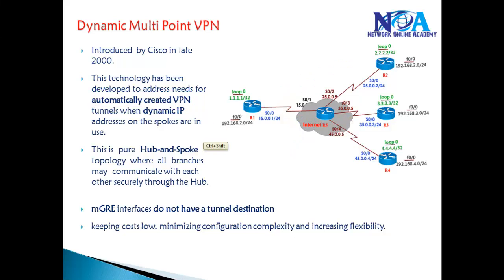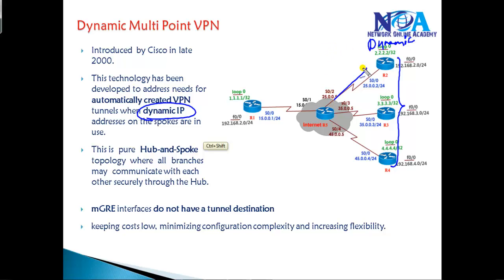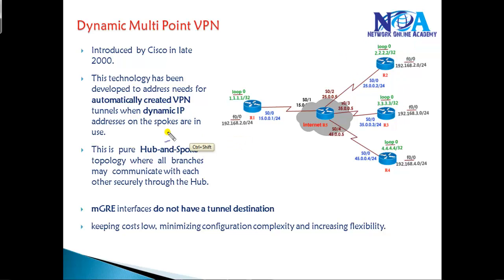One more major advantage is that on the spokes — Router 2, Router 3, and Router 4 — we can have dynamic IP addresses. Dynamic IP addresses are those given by the service provider that keep changing via DHCP. For example, if the IP address is 25.0.0.2 today, even if it changes the next day, the VPN will still work. That is something Dynamic Multipoint VPN supports.